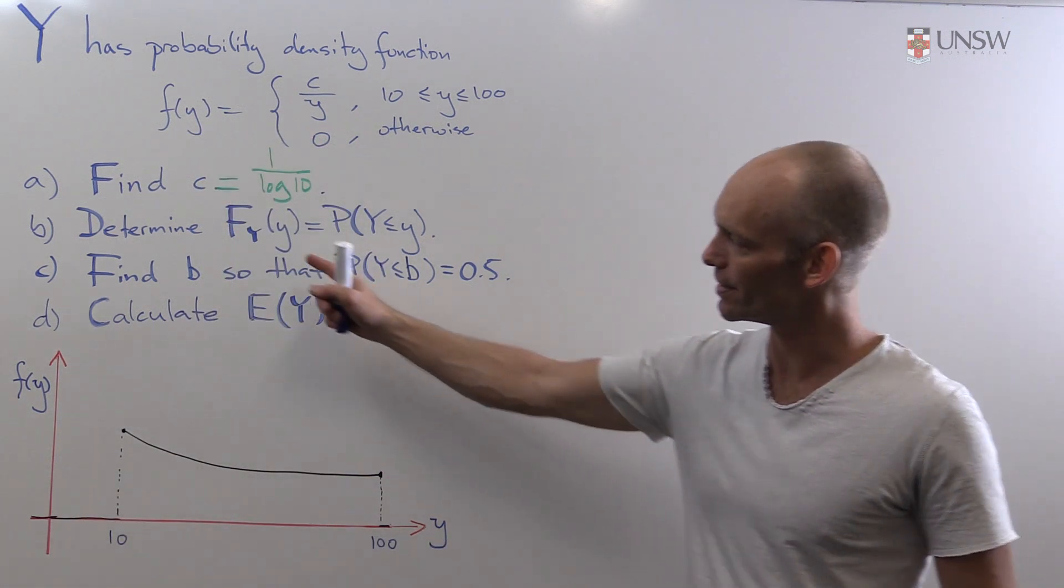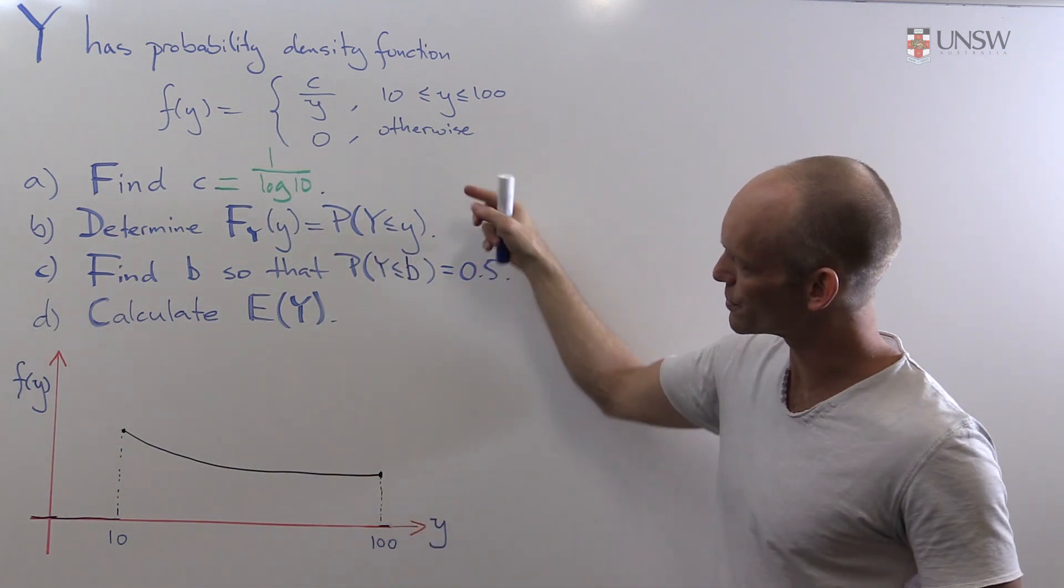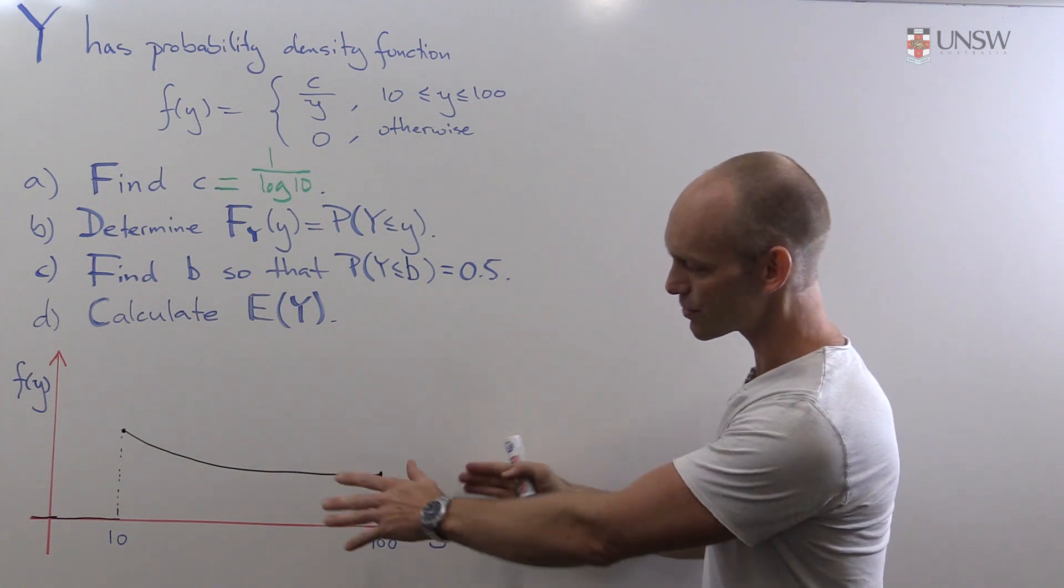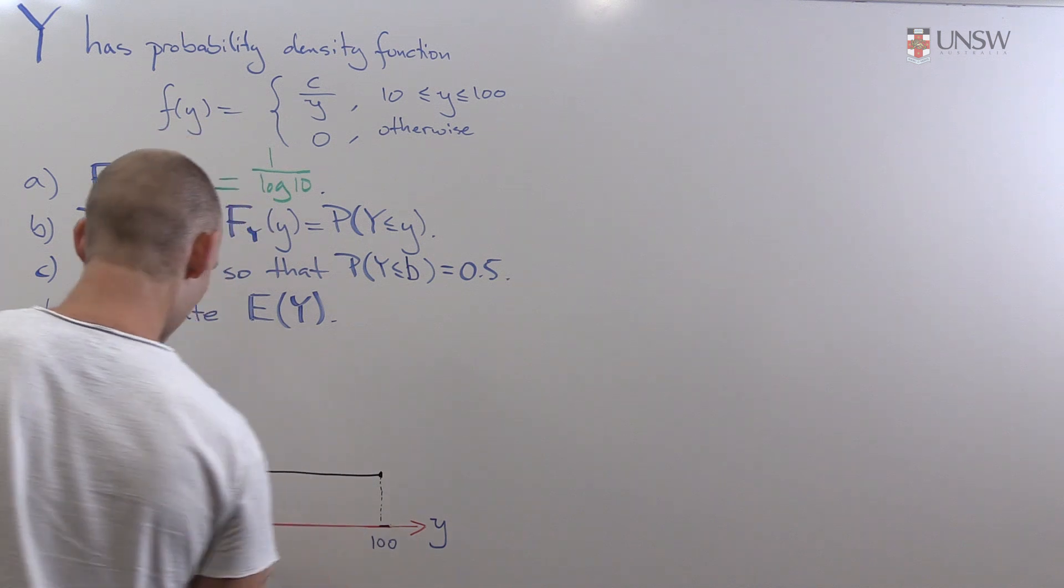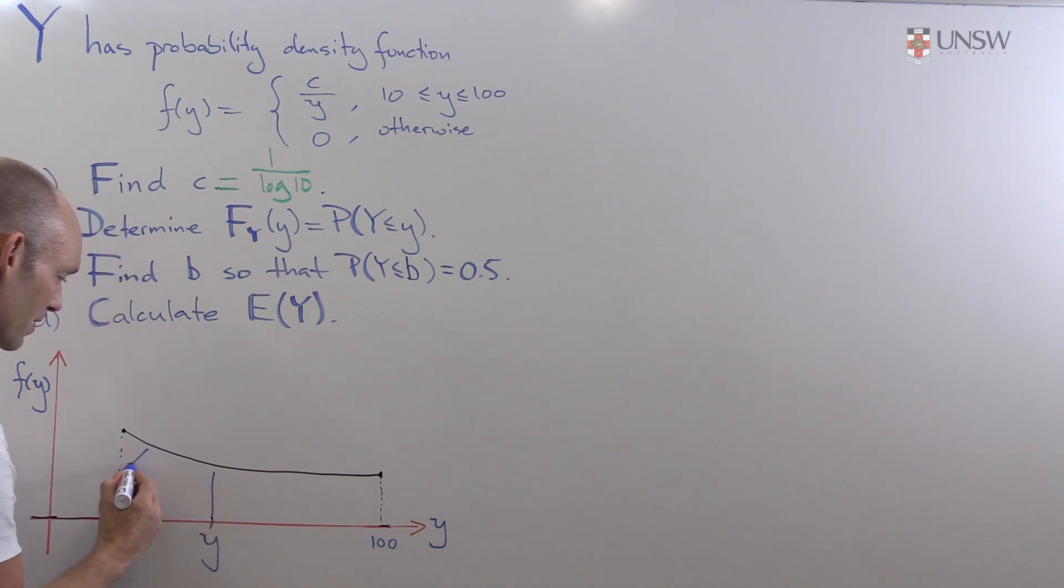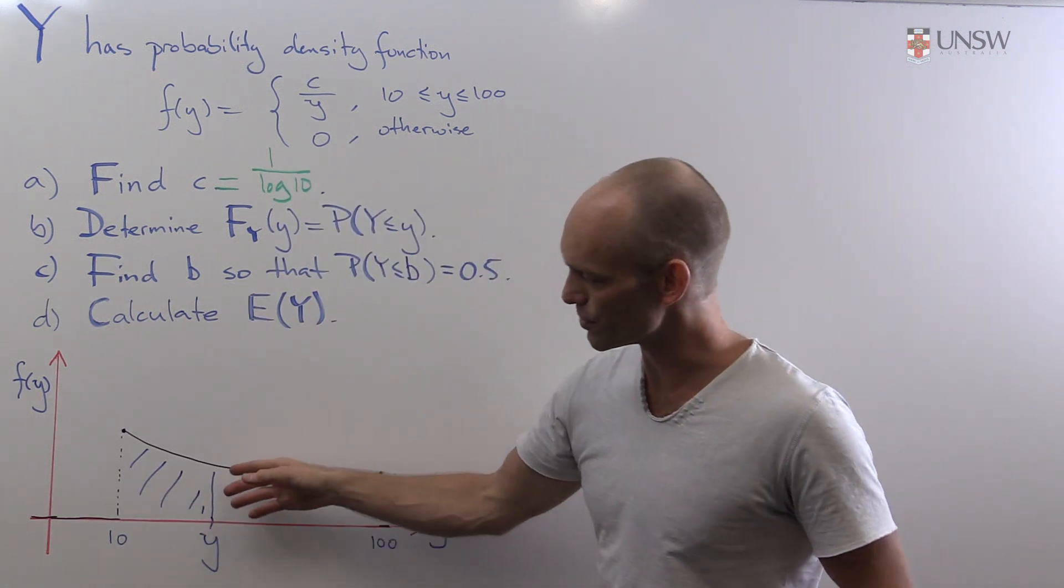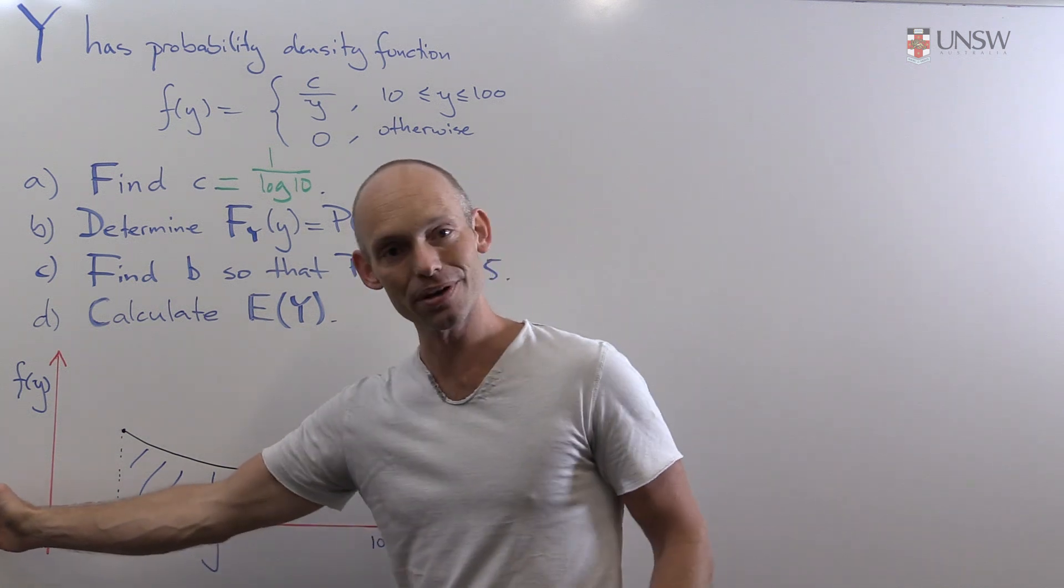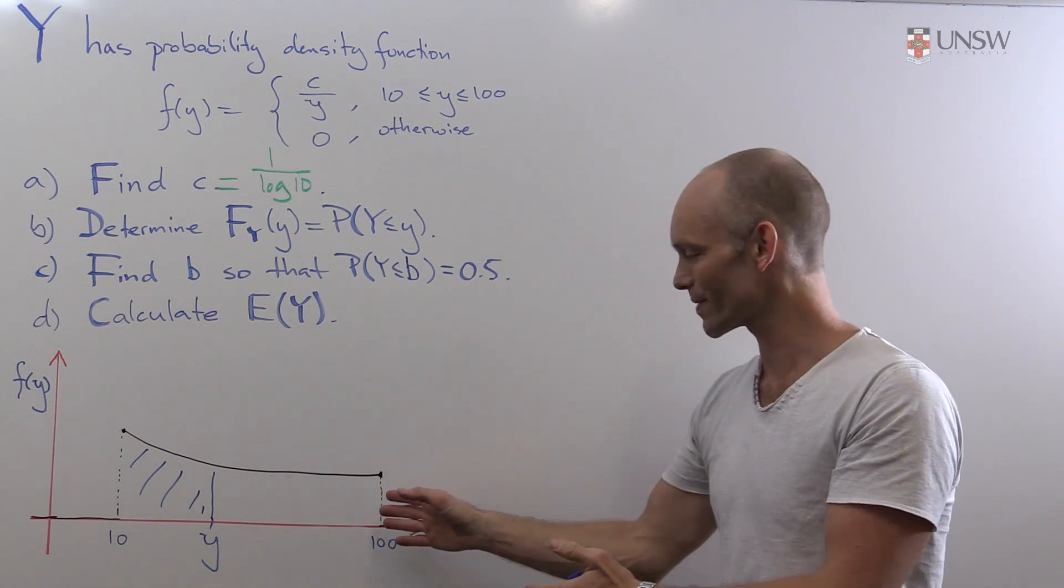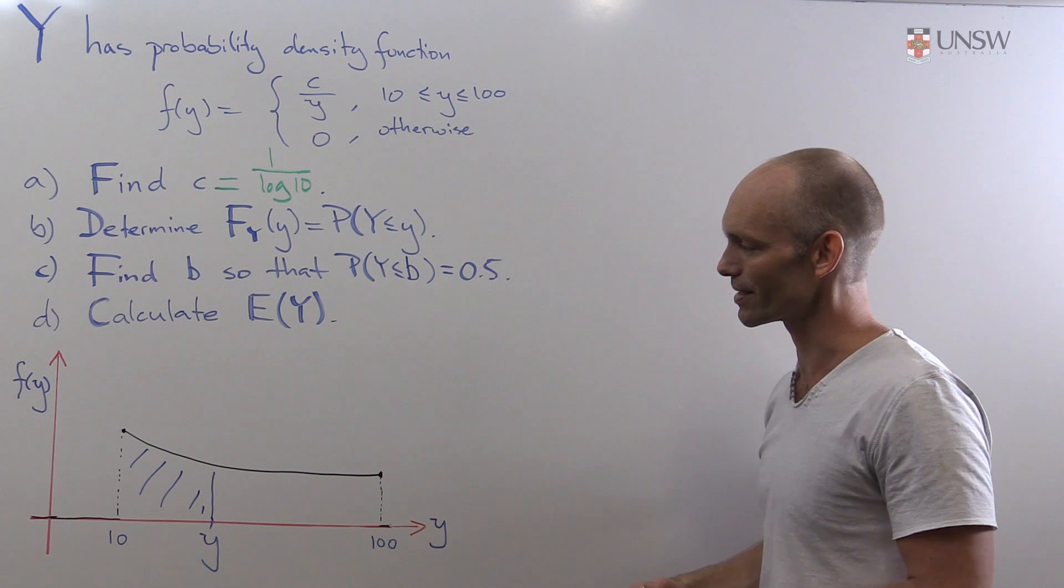In part b we have to find the cumulative function, or cumulative probability function of y, which is given by the probability that y is less than or equal to this variable little y. What does that mean? Well it means that we're looking at the graph here, and we're taking the area underneath it. So if we have y here, then we're looking at the area here. So it starts off being 0, and then it grows until we've got all the probability, in which case it's equal to 1, and then it stays steady at 1.